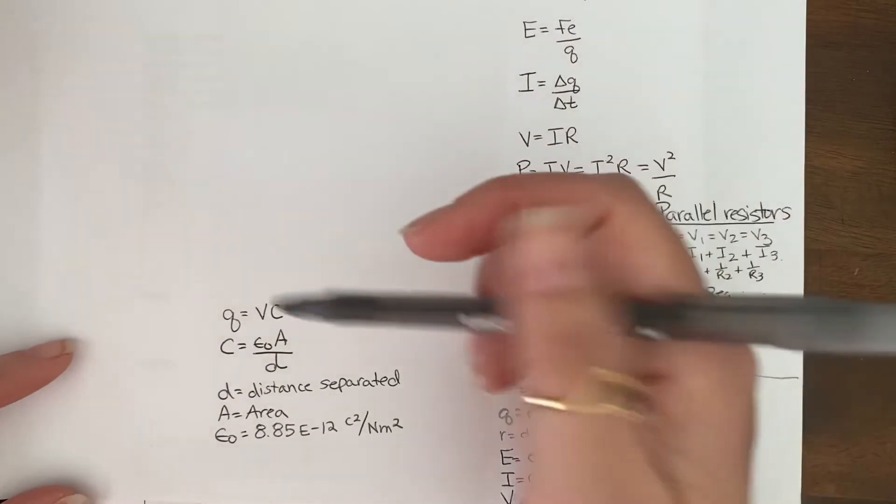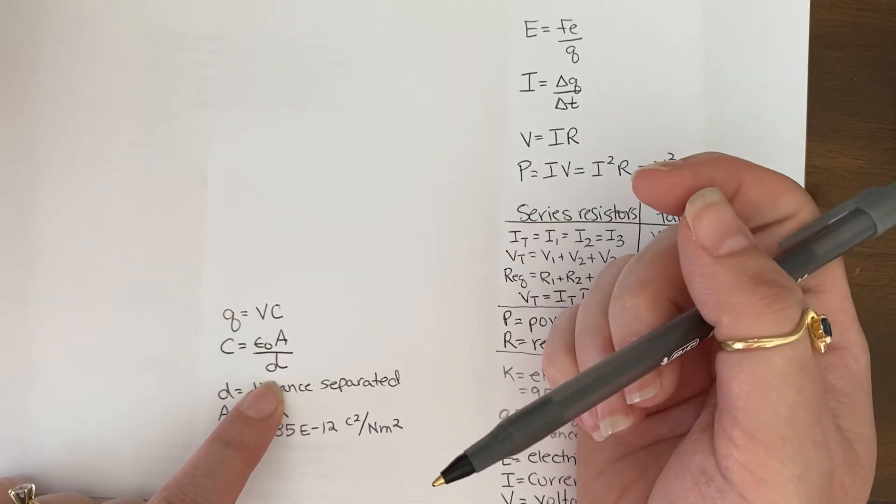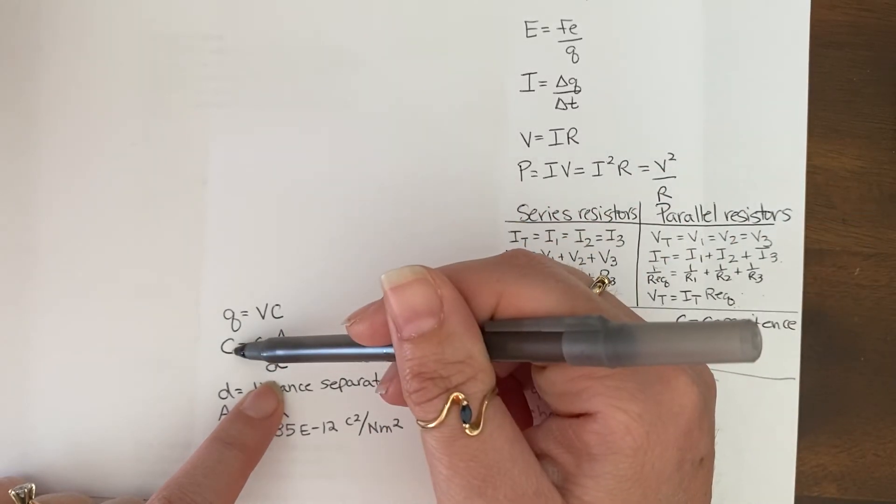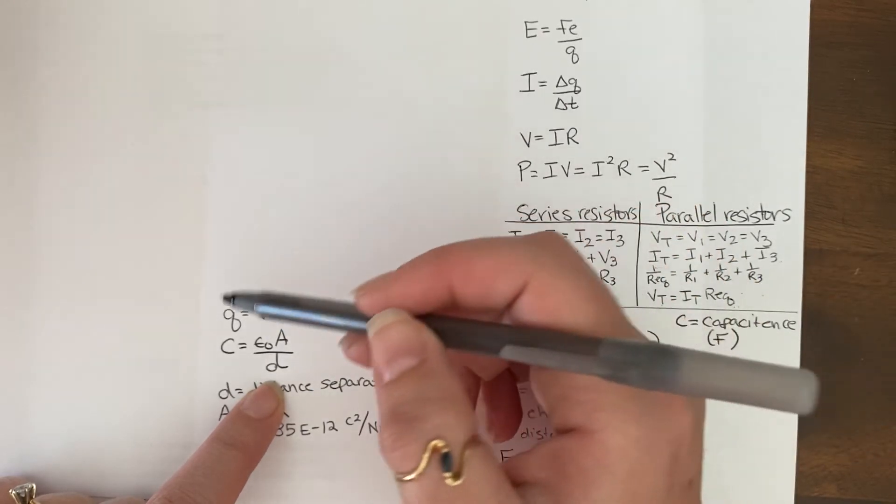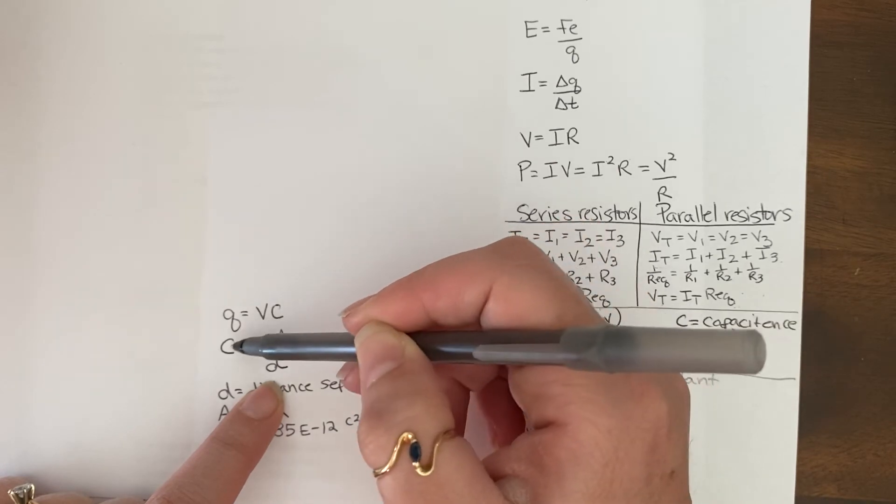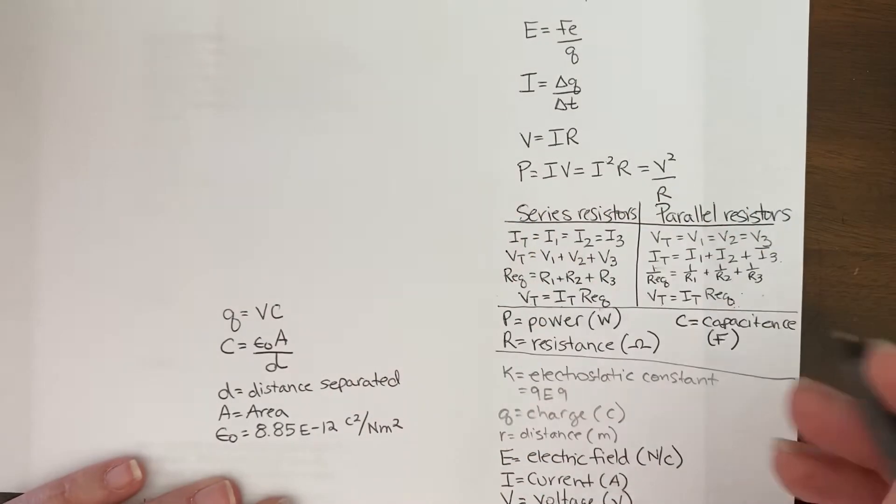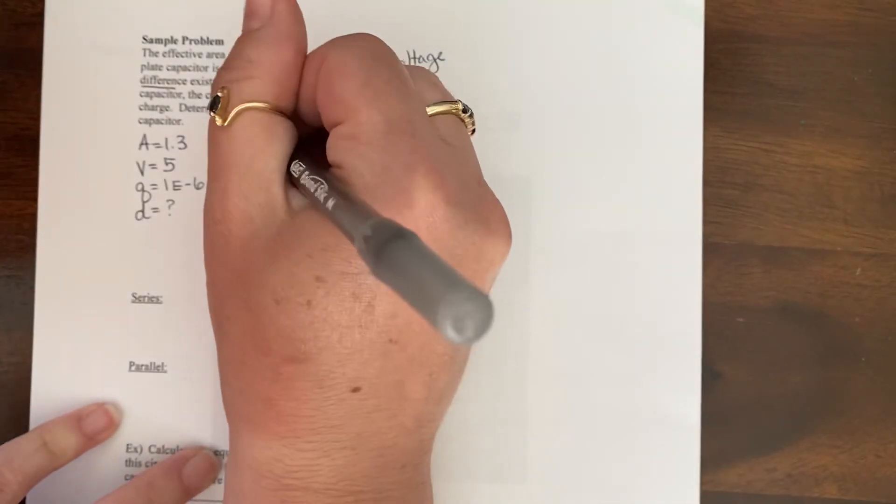Now, here we go. We're looking to find the plate separation of the capacitor, but there's one problem. You seeing what I'm seeing? We've got this, we've got this, but we don't have this. So this is a good example of when we need to use these two equations first. So if we use this first equation to find C, then if we take C, we can put it in here to find D. You with me? If you think you got it, pause the video or fast forward and see what you got. Check your answer versus mine. If you'd like to go along with me, that's cool.